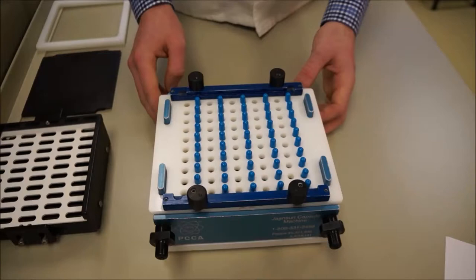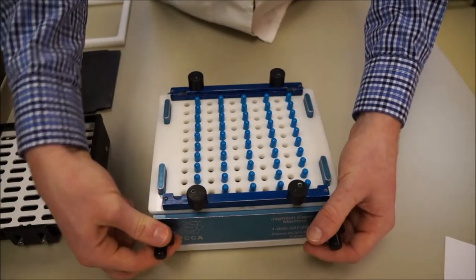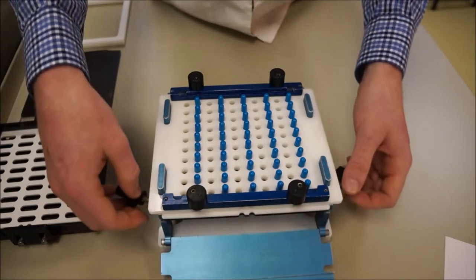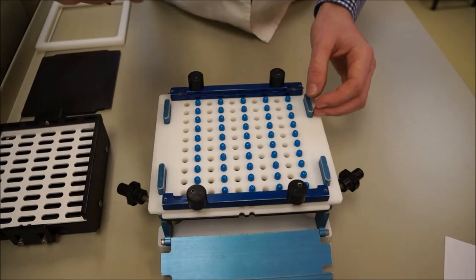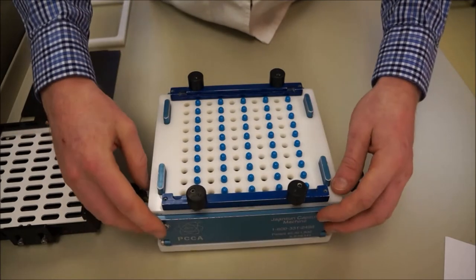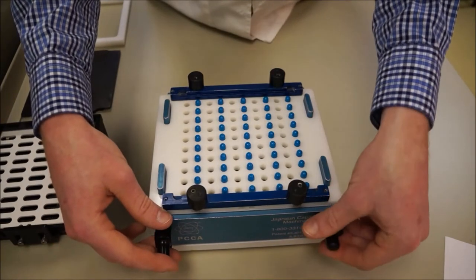Now I'm going to unlock the front of the capsule machine, pull those off. I'm actually going to wiggle the two bottom plates just so the capsules can drop down on them, because they're a little offset and couldn't drop down. I'll just wiggle them so they can drop down.